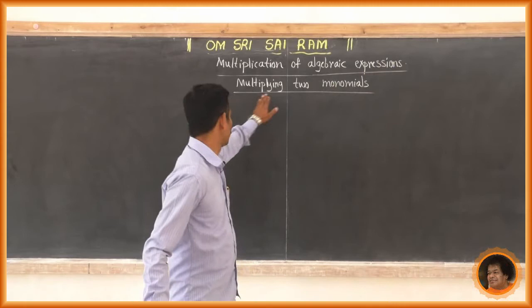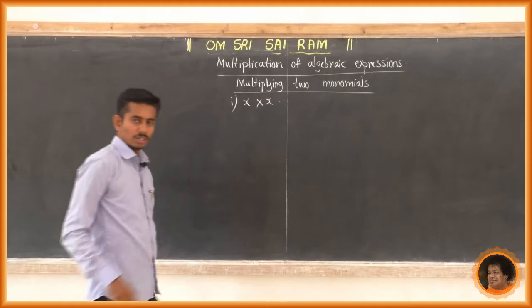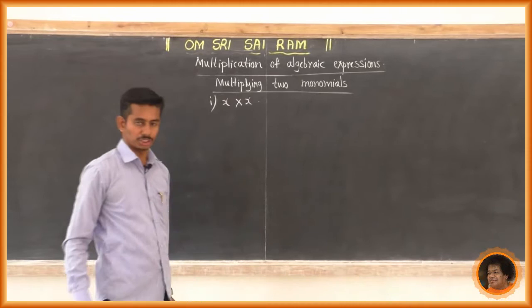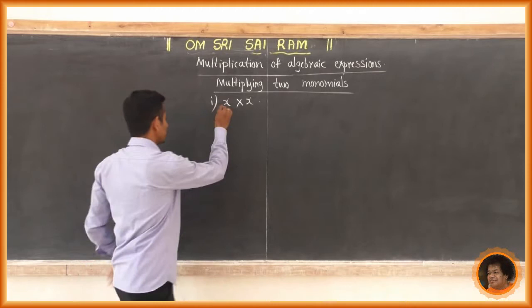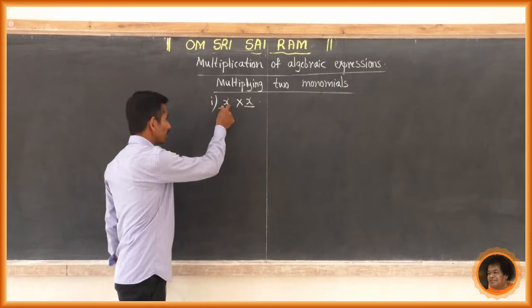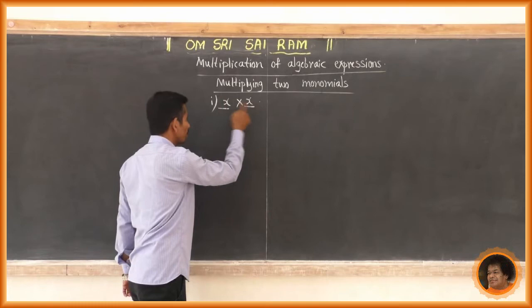First example: x multiplied by x, or find the product of x and x — we write it as x into x. This is a multiplication of two monomials. Why is it monomial? Because each is an expression which contains a single term, so both are monomials.